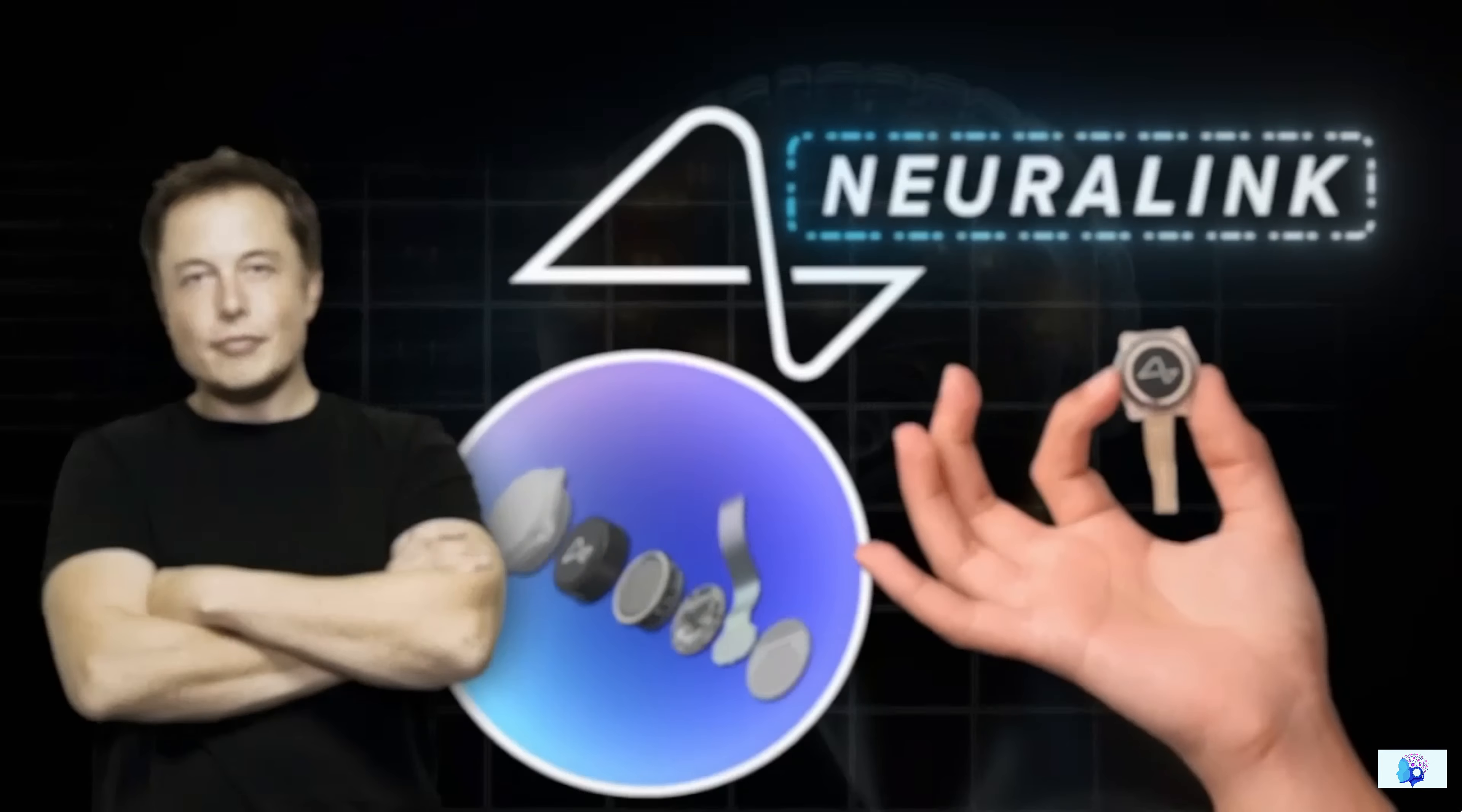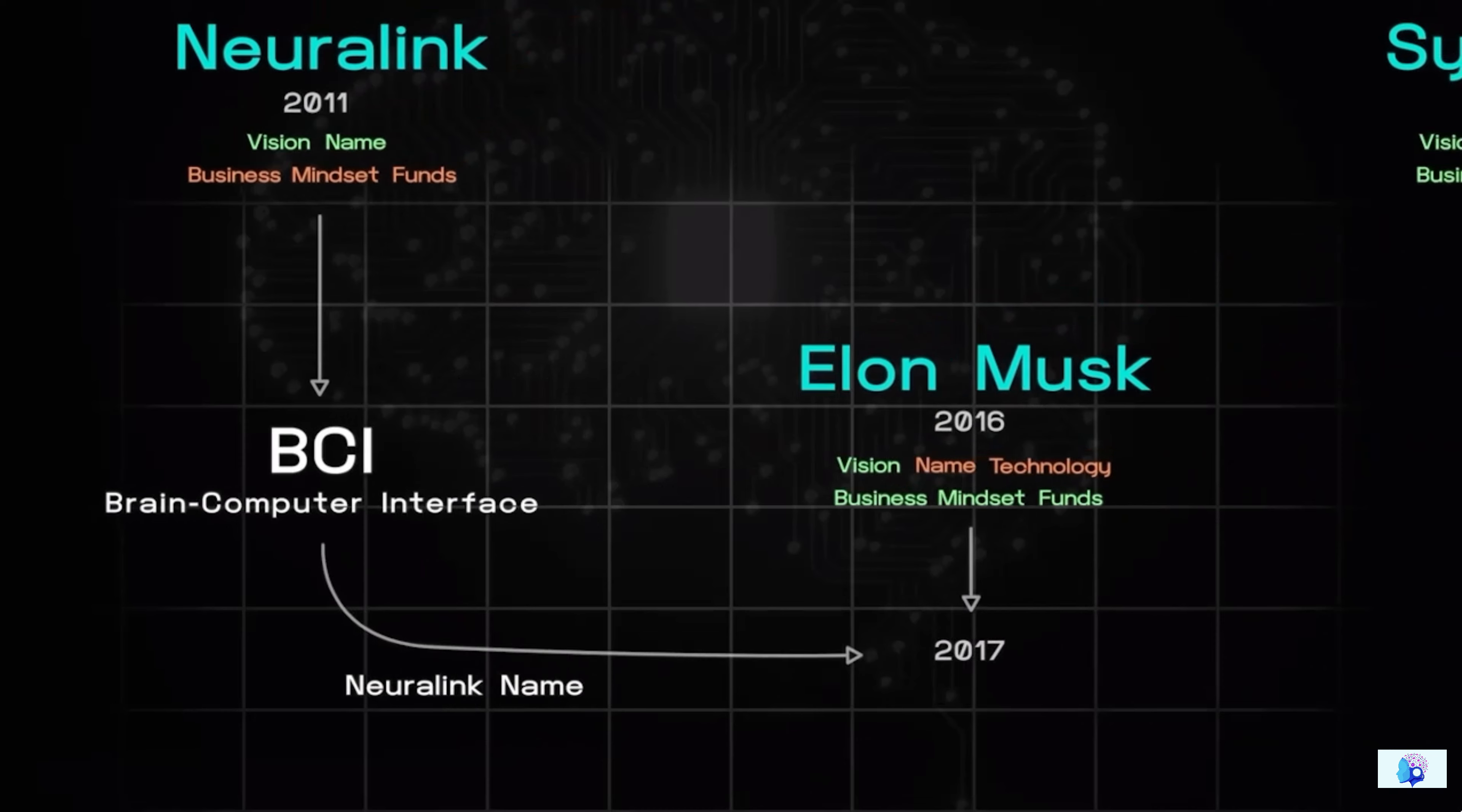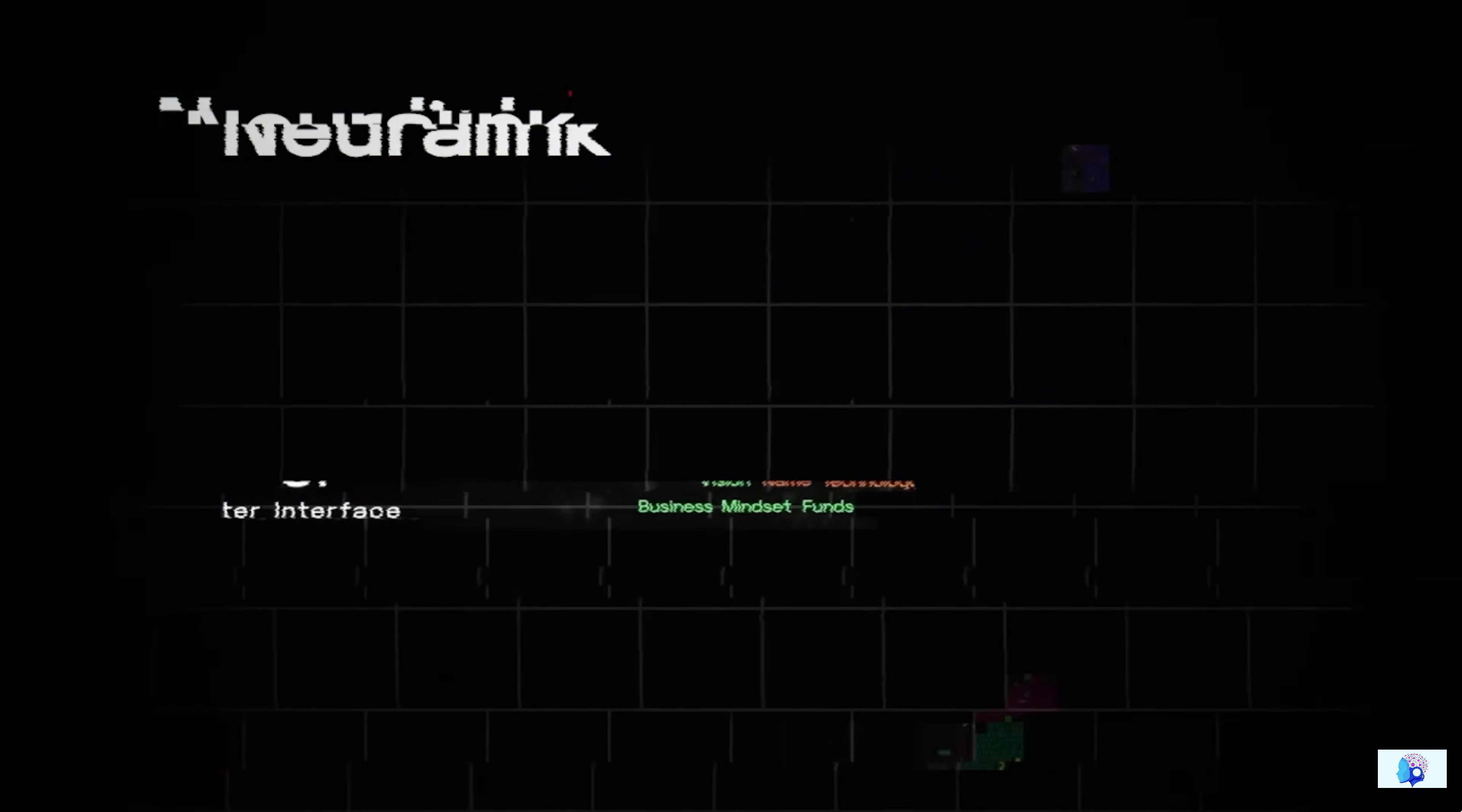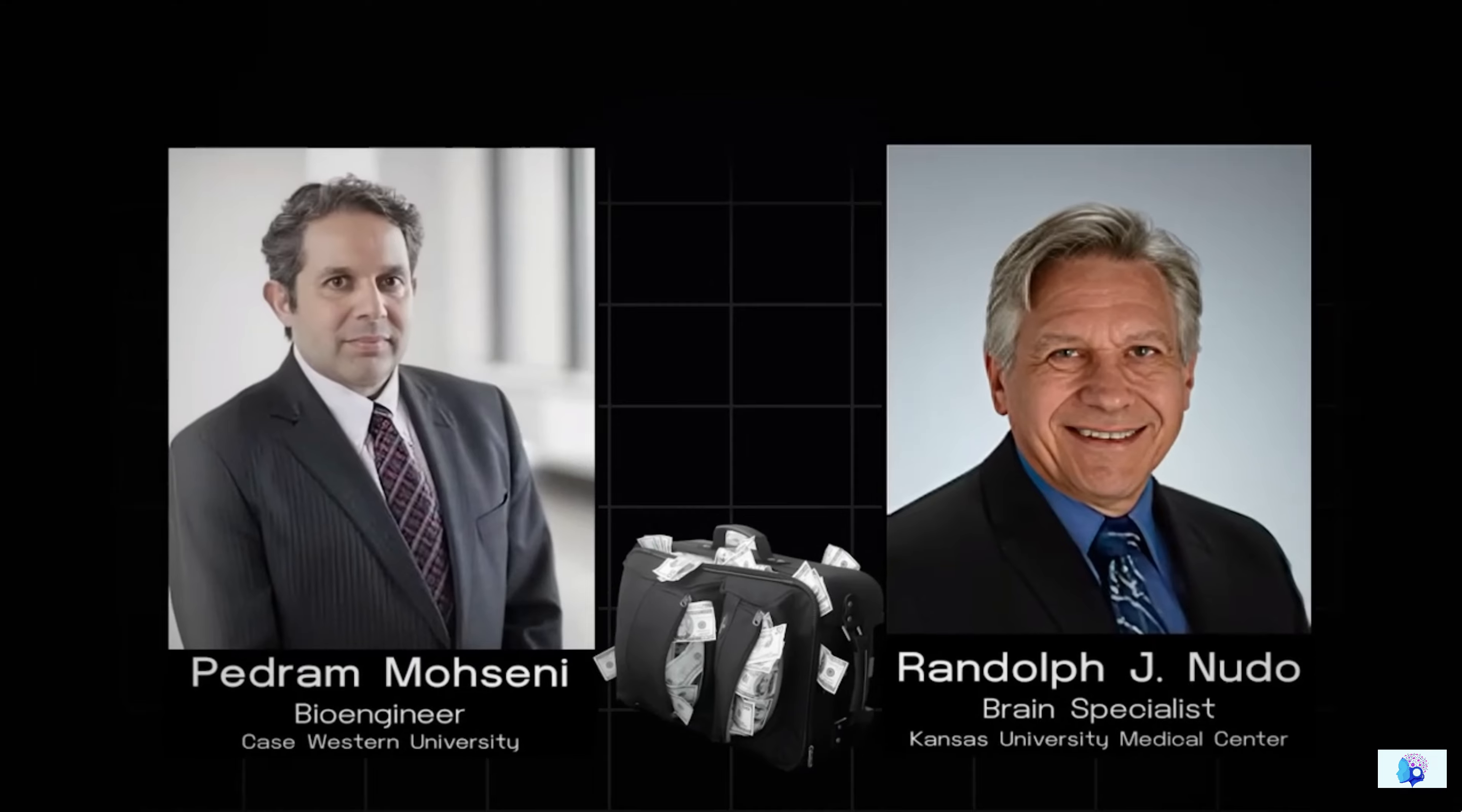But those who have followed the timeline of this entire BCI race understood very well that Musk was essentially trying to get rid of his competitor. Now, here, brilliantly, Elon Musk benefited in two ways. As soon as Musk paid the founders of Neuralink and bought their name from them, he not only assisted them by funding their ongoing research, but also gained control of the NTD.